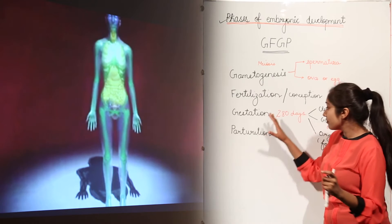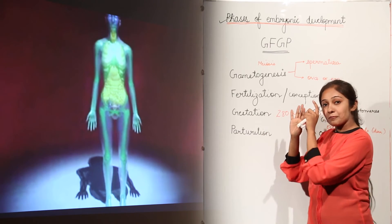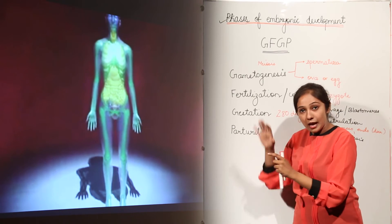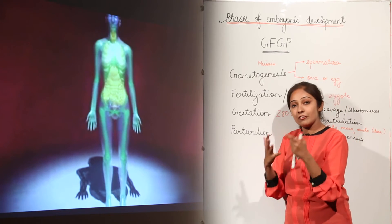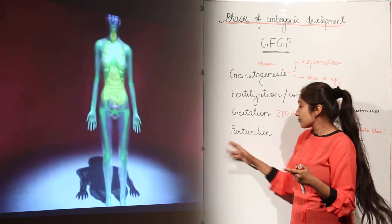organogenesis and then we have parturition, which means when the organism is fully developed, that embryo is fully developed, this is going to come out and leave the mother's womb. So that is this parturition period.